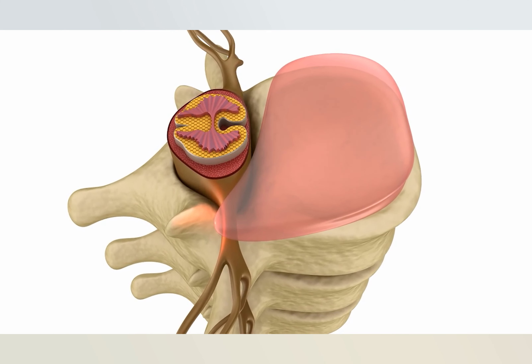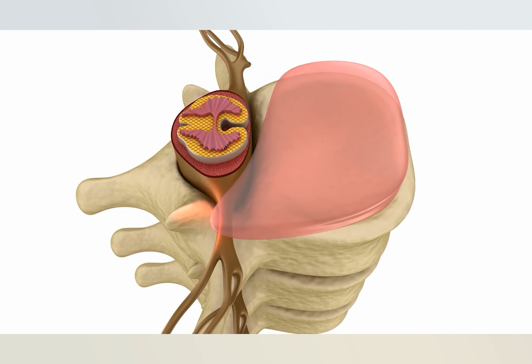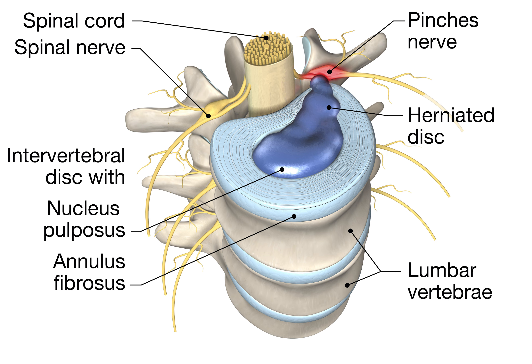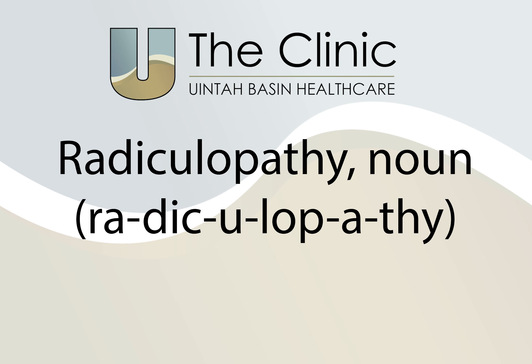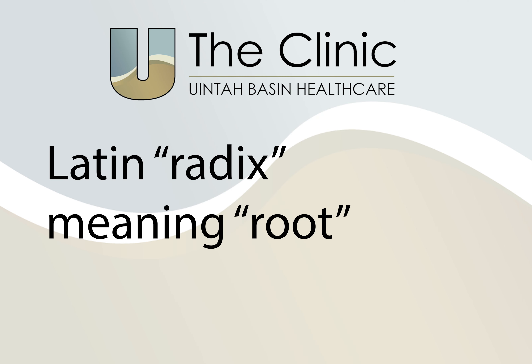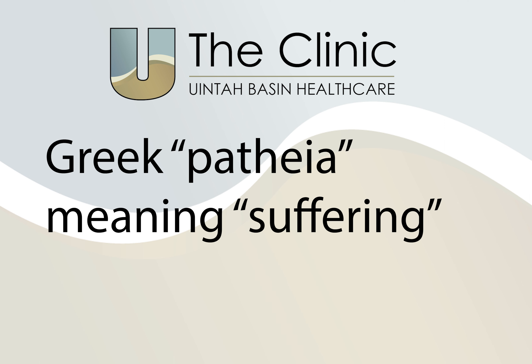Nerve roots split from the spinal cord and travel between the vertebrae through spaces called foramina into various areas of your body. When these nerve roots become pinched or damaged, the resulting symptoms are called radiculopathy — from the Latin word radix meaning root and the Greek word pathia meaning suffering.